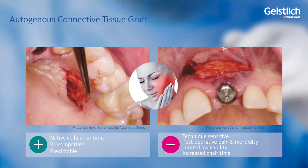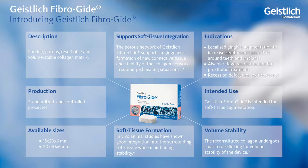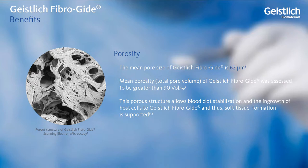So, does a viable alternative to this time-tested technique exist that might increase patient acceptance? Geislik FiberGuide is a new porcine-resorbable and volume-stable collagen matrix intended for soft tissue augmentation, indicated for localized gingival augmentation to increase keratinized tissue around teeth and implants, alveolar ridge reconstruction for prosthetic treatment, and recession defects for root coverage. Its porous collagen network supports angiogenesis and formation of new connective tissue, while maintaining its volume stability.